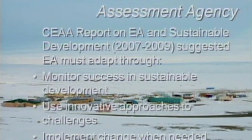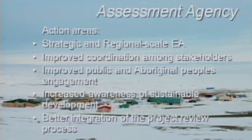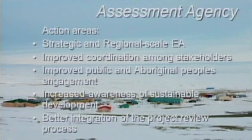The Canadian Environmental Assessment Agency had a 2007 to 2009 report on sustainable development that said they should monitor success in sustainable development, be innovative, and implement change when needed. Their action areas include strategic and regional-scale EA, improved coordination, public and Aboriginal peoples' engagement, increased awareness of sustainable development, and better integration of project review processes. But it doesn't mention climate change, and I think that's pretty important — the fact that it's not there.